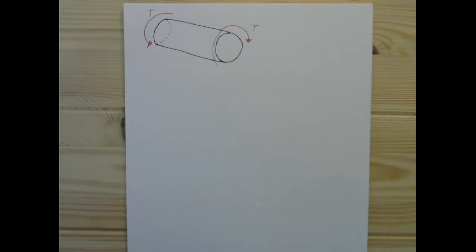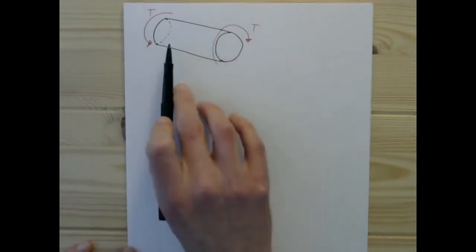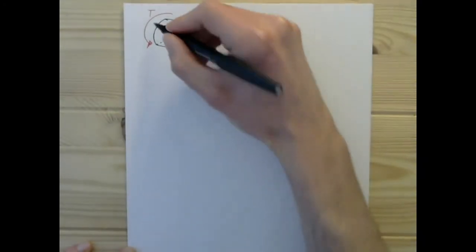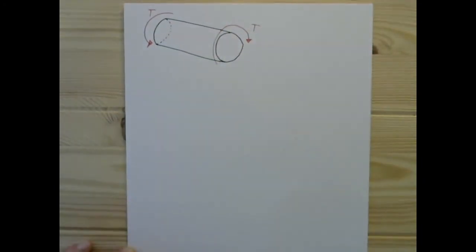Today we'll be talking about the effect that torsion has on circular bars. So if we have a bar loaded like this in torsion about the x-axis, that's the axis going along the direction of the bar...